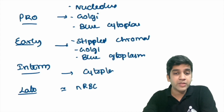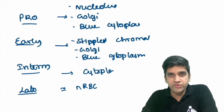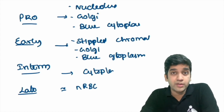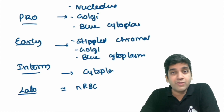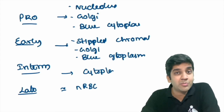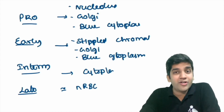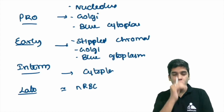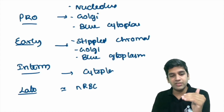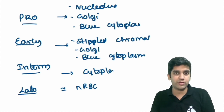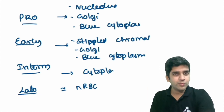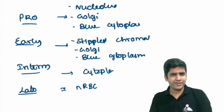When counting erythroid cells, it's not always required to specify what percentage are early or late normoblasts. However, in pathological cases it may be required. For example, parvovirus inclusions are seen in the pro-erythroblast, not in the late normoblast — so you need to know which cell you're dealing with. Knowing normal morphology puts you a step above anyone who doesn't understand it. With this knowledge, let's go to the microscopy and identify which cell is pro, intermediate, early, or late.